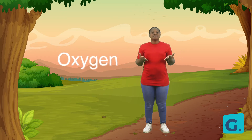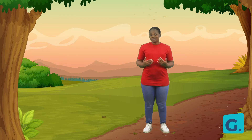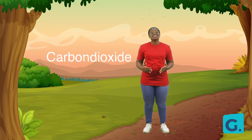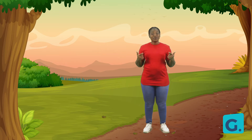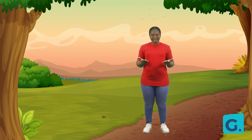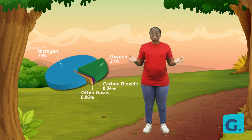We breathe in oxygen. Do you know what we breathe out? Yes — carbon dioxide! Carbon dioxide is also a gas found in air. When we breathe in and breathe out, we don't see anything, do we? And we aren't able to hold anything either. This is because air is a mixture of gases.